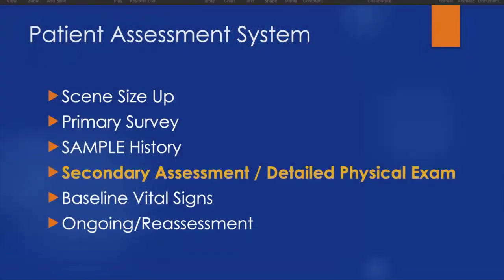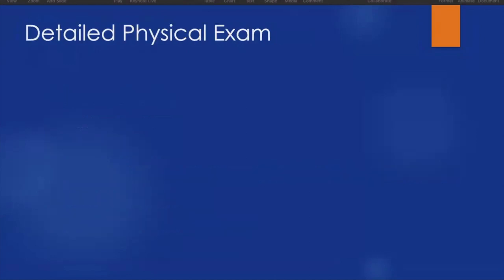The next piece of our patient assessment system looks a little different depending on whether you are working with a medical patient or a trauma patient. Our secondary assessment is very similar with both populations, but in our trauma patient, which we're going to talk about now, we call it a detailed physical exam. The detailed physical exam is looking for things that are out of the norm, that don't belong.